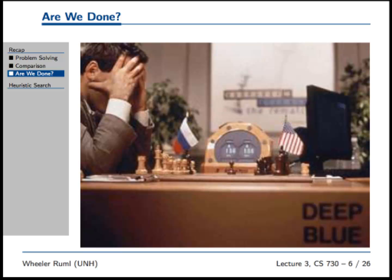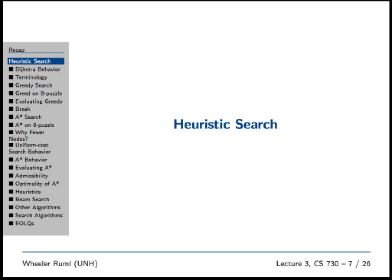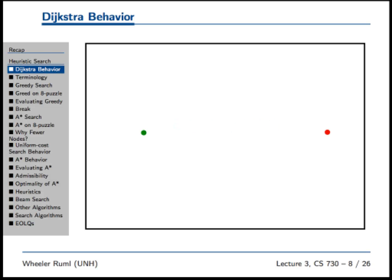Does anyone know who this is? It's a Russian guy — see the little flag here? This is Garry Kasparov getting crushed by Deep Blue. He did win some games, but not enough. So there's a lot more to making a system like this than what we've covered so far.